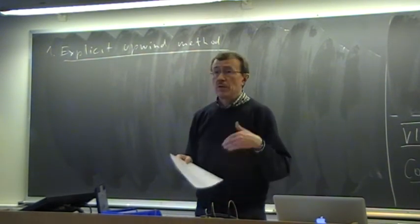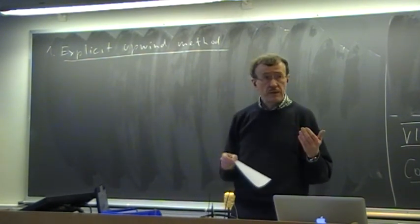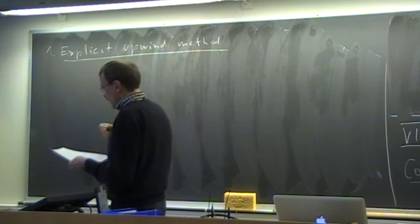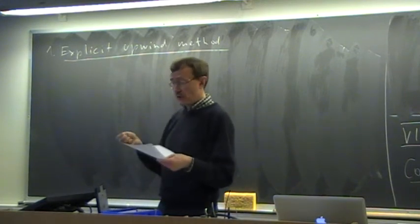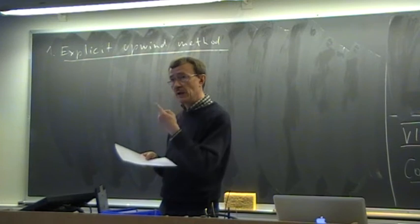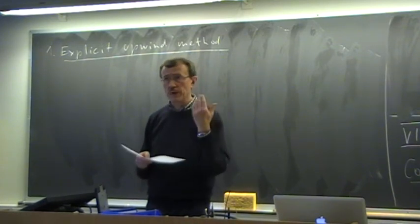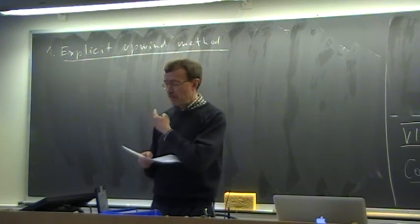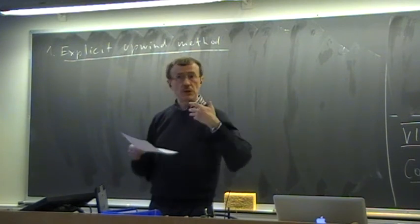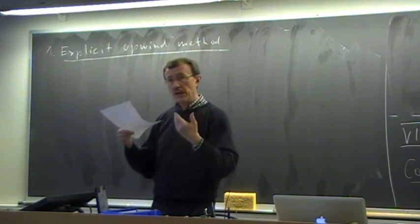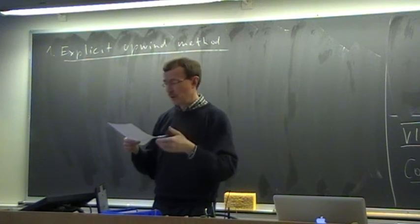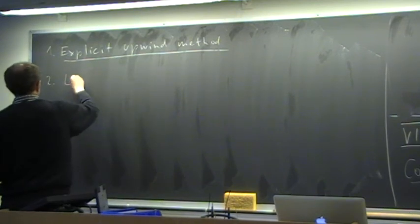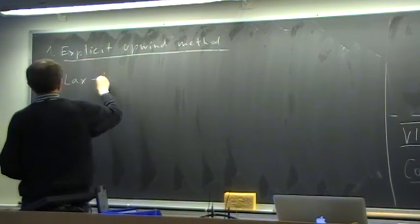The stability condition is then the generalization of what we derived for the linear advection equation. It is the maximum Courant number, which has to be smaller than 1. Because here in the Burgers equation, the velocity enters itself — the c from the linear advection equation is now u, and u is changing. So we have to take the maximum modulus to get the condition.